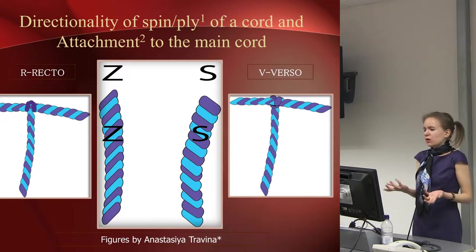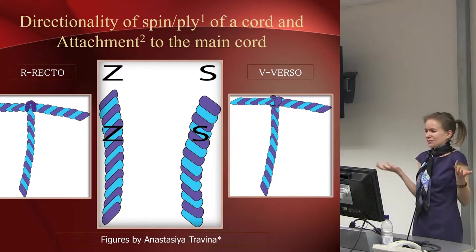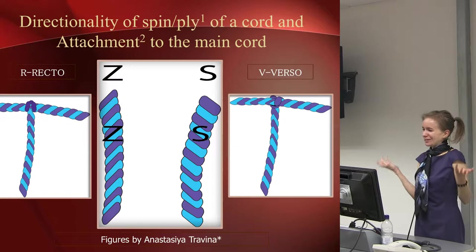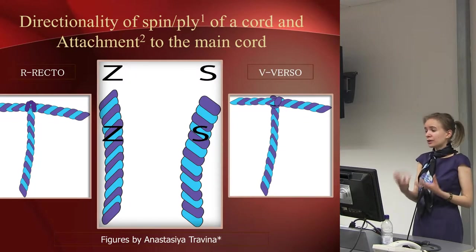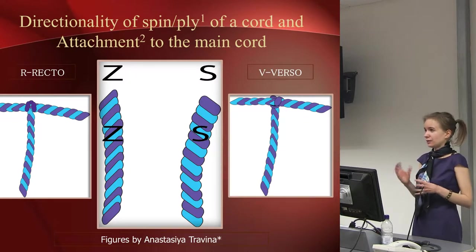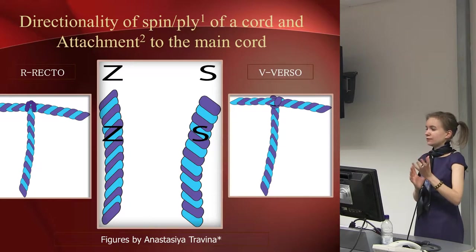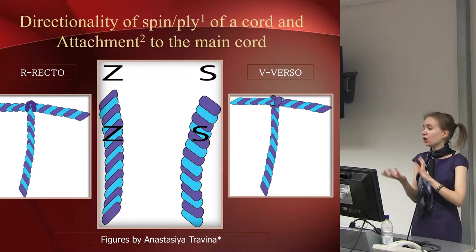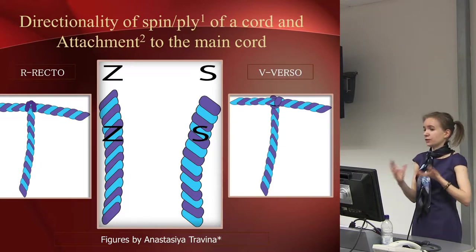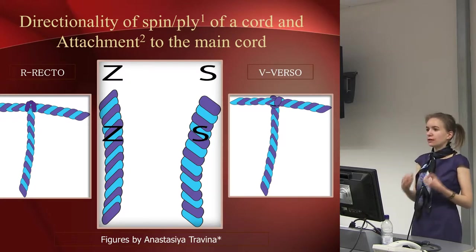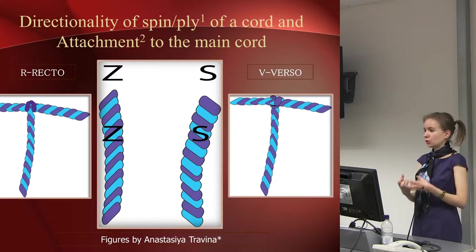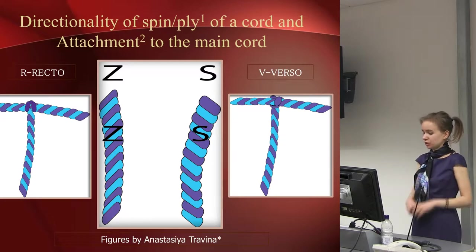At first you might think, how significant is some kind of attachment to a knot? But the way information was encoded in kipus was actually binary, and now many researchers are coming to the idea that it was more of a 3D format. You didn't just use the color of the cord or a number of knots — you were using many different parameters to encode and read that information.